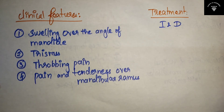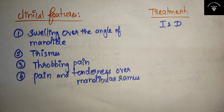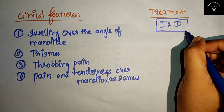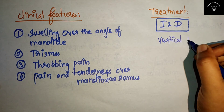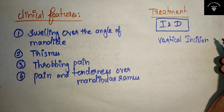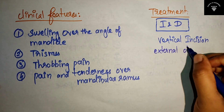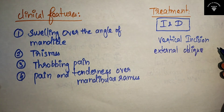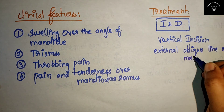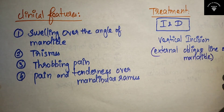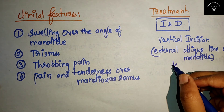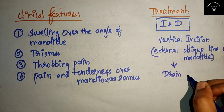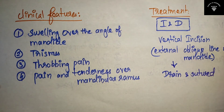Let's move on to the treatment of submasseteric space infection. The treatment will be incision and drainage — this is the most common treatment. A vertical incision is made on the external oblique line of mandible. Then the drain is placed, pus is evacuated, and it is sutured. This is the treatment of submasseteric space infection.